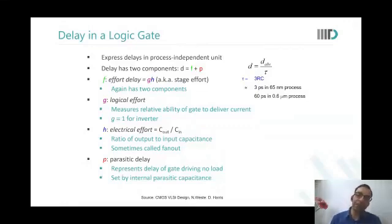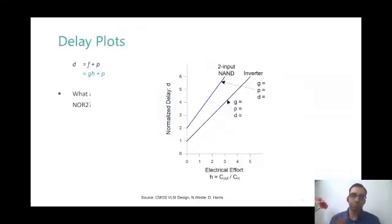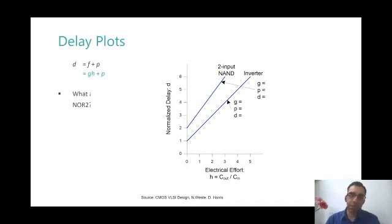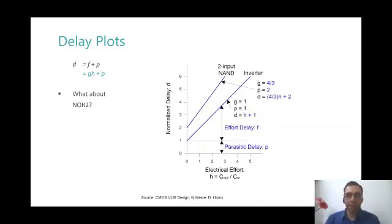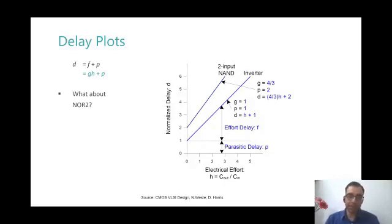We plotted the delays of a two-input NAND and an inverter for different electrical efforts. For a NAND gate, g = 4/3 and parasitic delay p = 2, giving d = (4/3)h + 2. For an inverter, g = 1 and p = 1, giving d = h + 1, where h is the fanout.